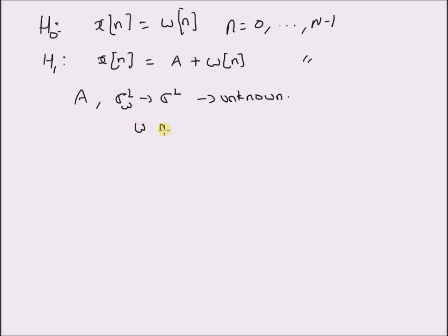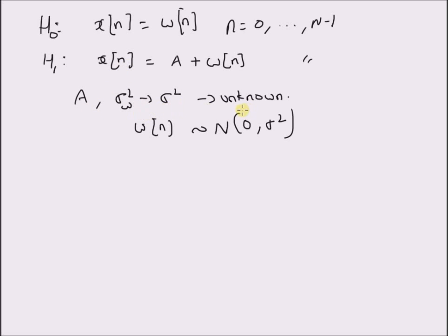Note that the noise component w(n) follows a normal distribution with mean 0 and variance sigma squared. The key point with this detection problem is that both the DC level and the noise power sigma squared are unknown.